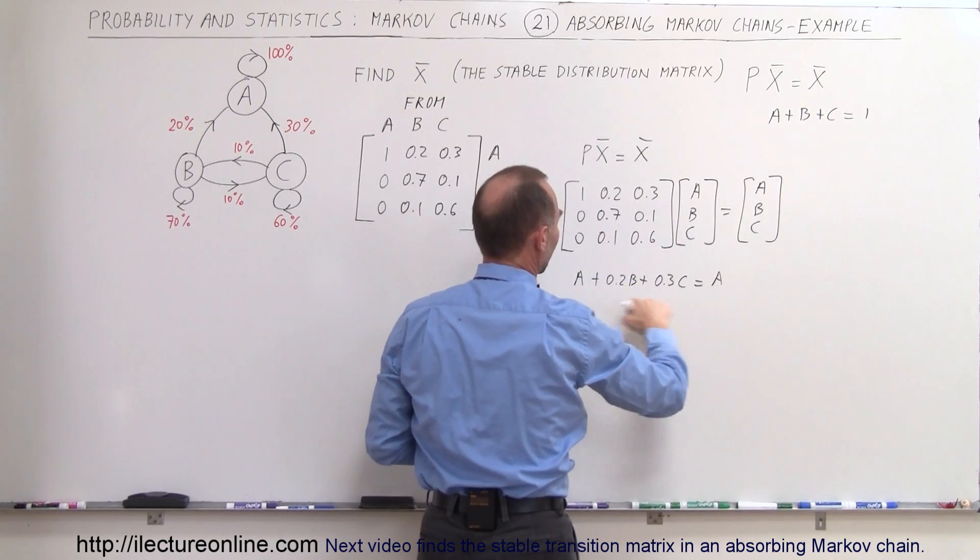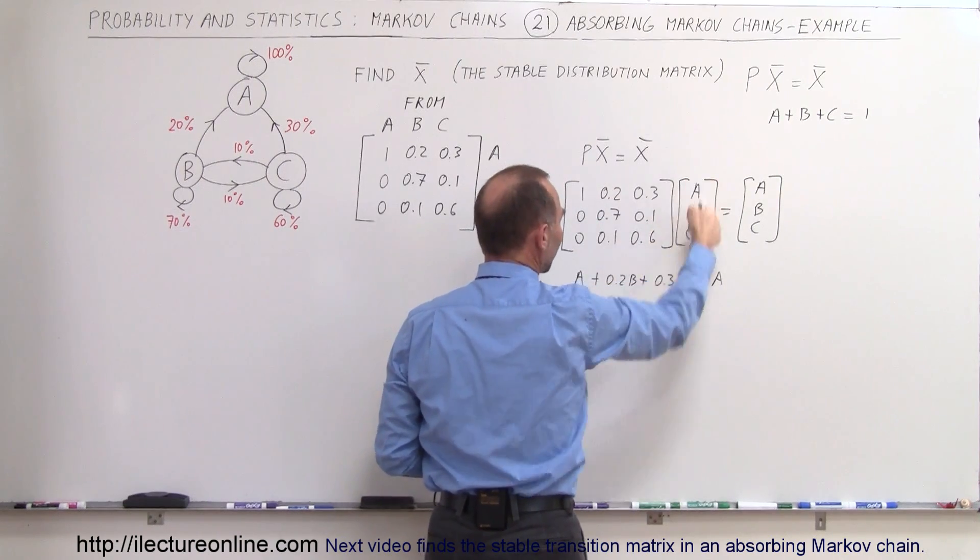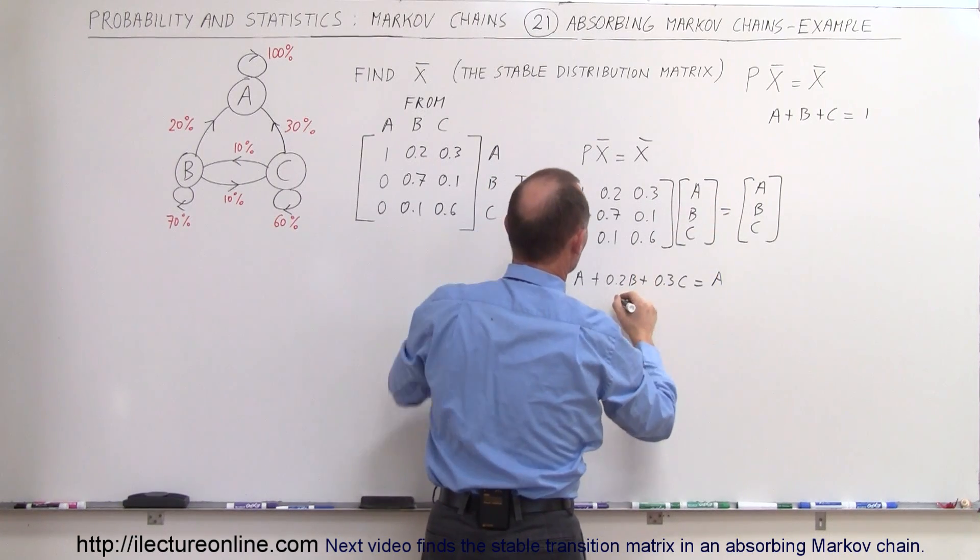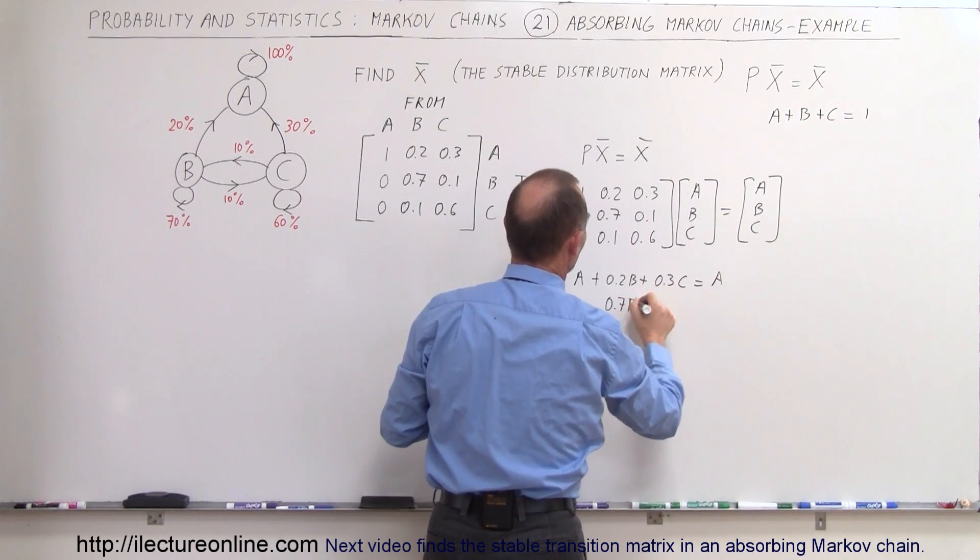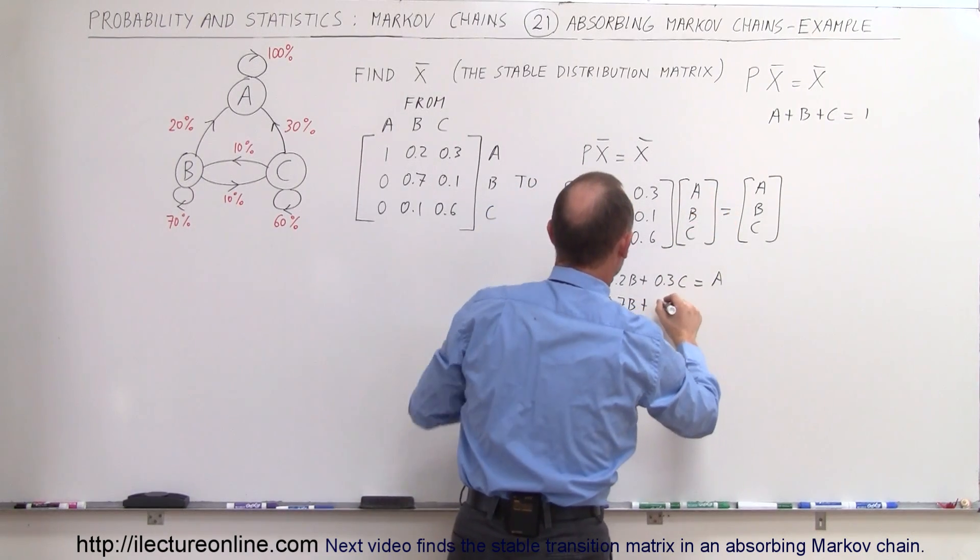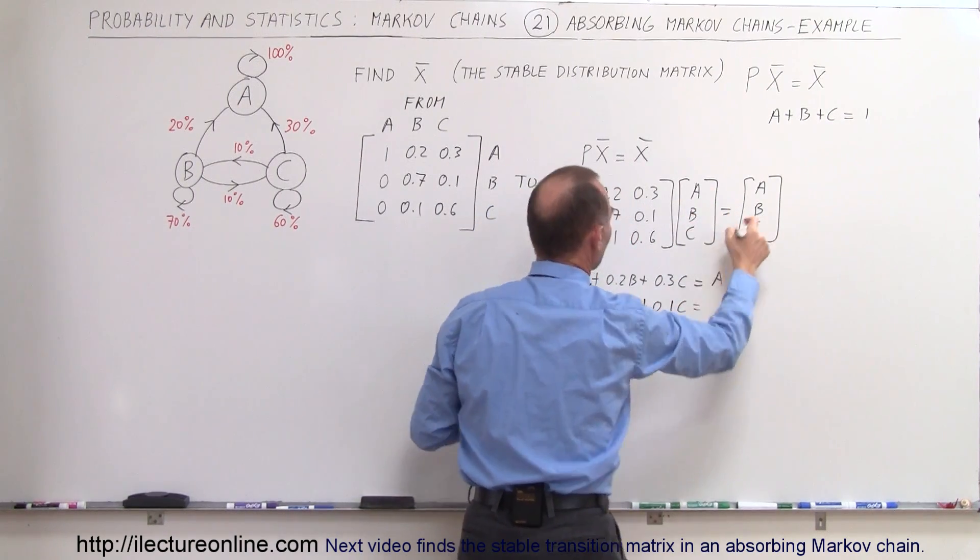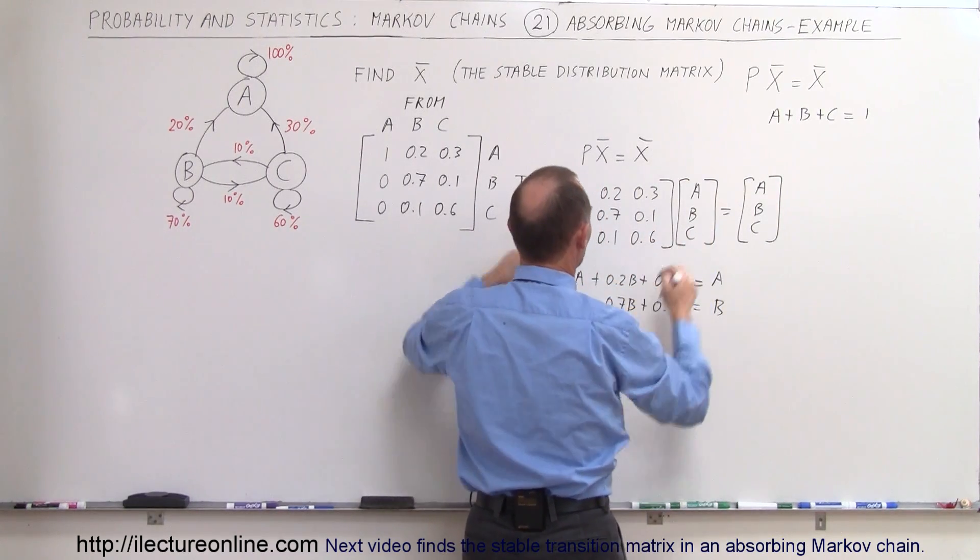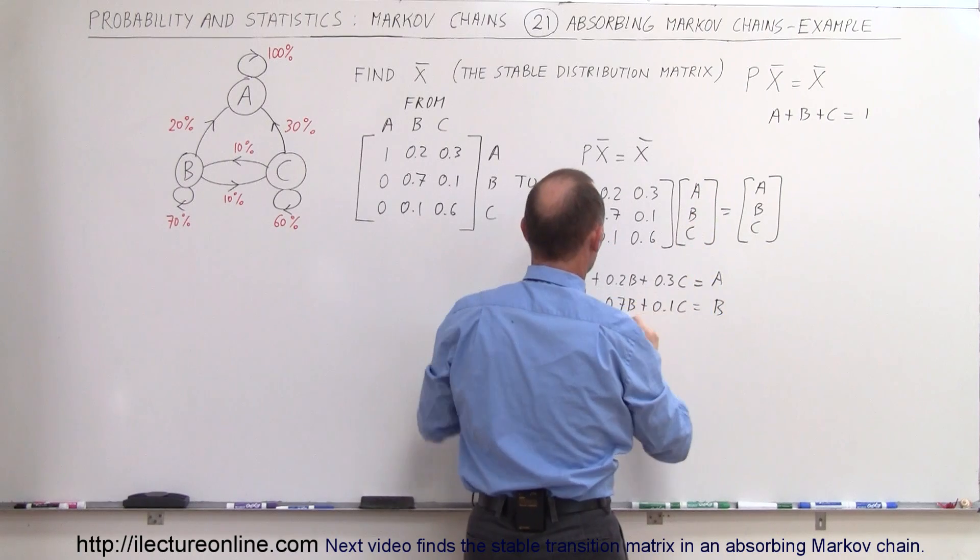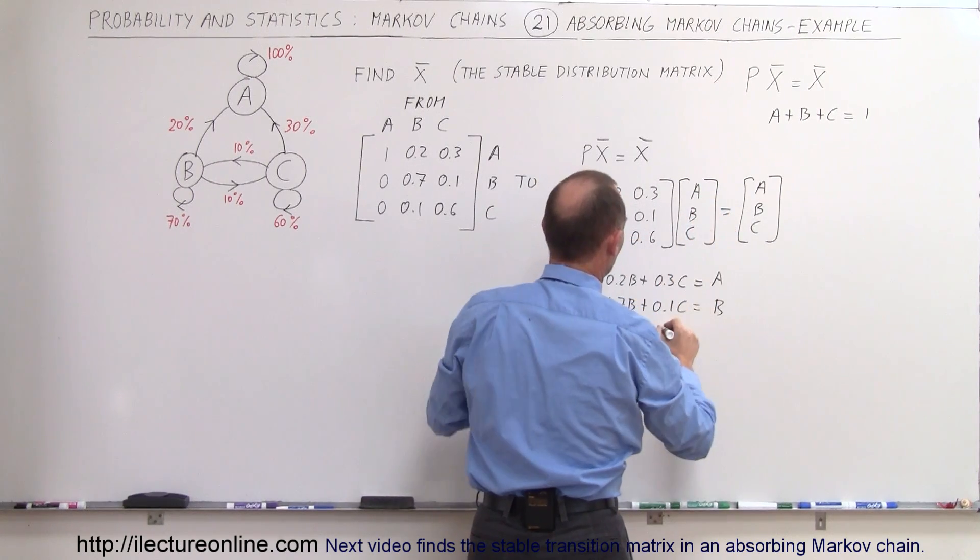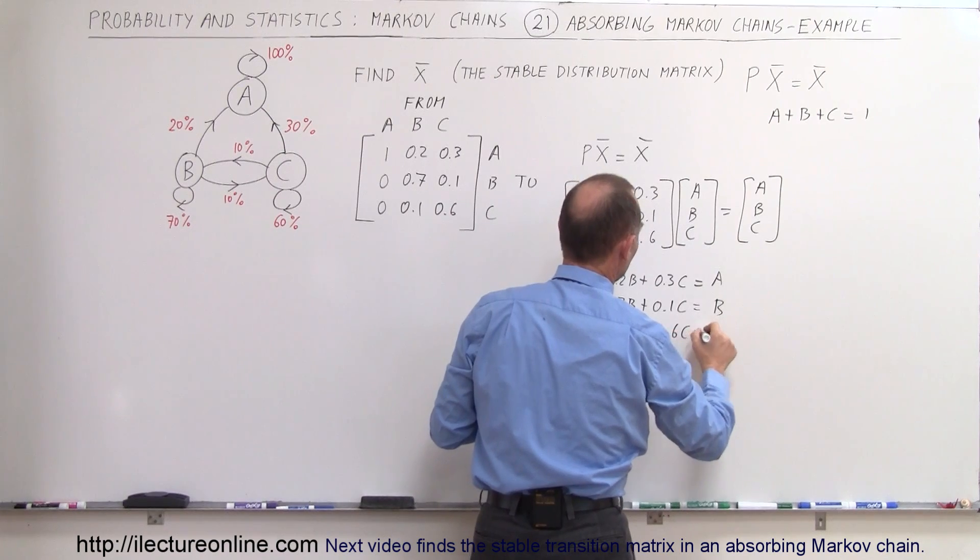On the second equation we multiply this row times this column, so we get 0A plus 0.7B plus 0.1C equals B. And finally we multiply this row times this column, so it's 0A plus 0.1B plus 0.6C equals C.